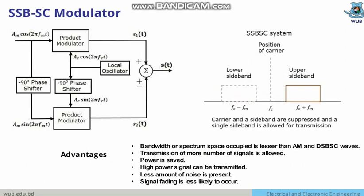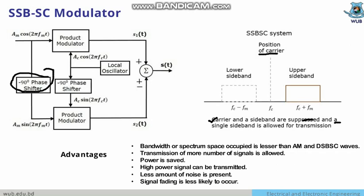In single sideband suppressed carrier (SSBSC) modulation, the carrier is again suppressed. The SSBSC system uses a 90-degree phase shifter to eliminate one sideband. Both the carrier and one sideband are suppressed, and only a single sideband — either the lower sideband (SSBSC-L) or the upper sideband (SSBSC-U) — is allowed for transmission. The suppressed parts are shown as dotted lines.